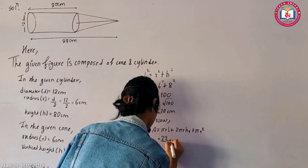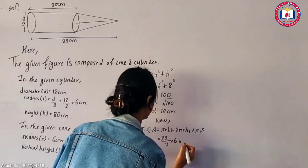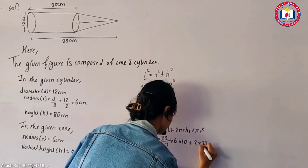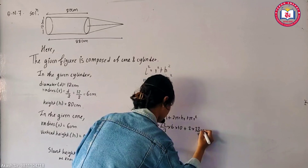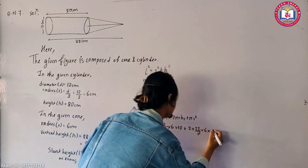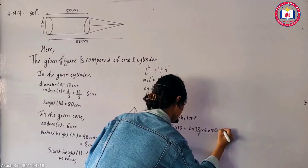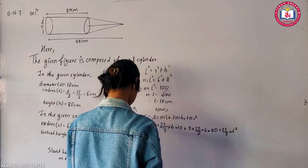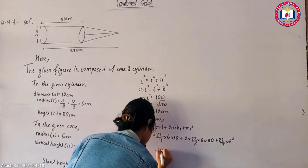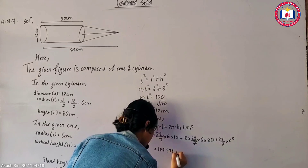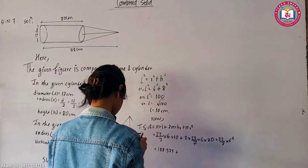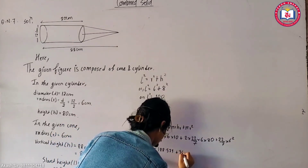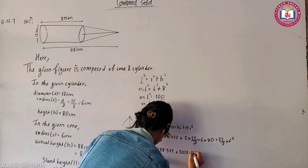π is 22 by 7. The radius r is 6, the slant height l is 10, and h1 is 18. So π r squared is 22 by 7 into 6 squared.